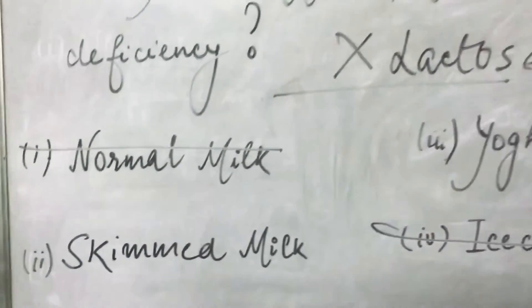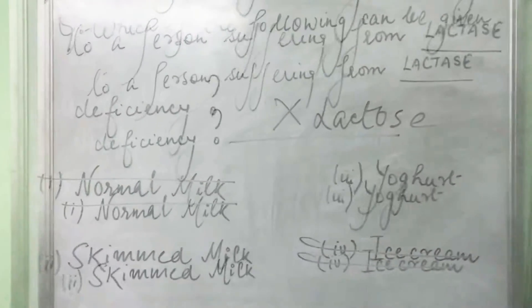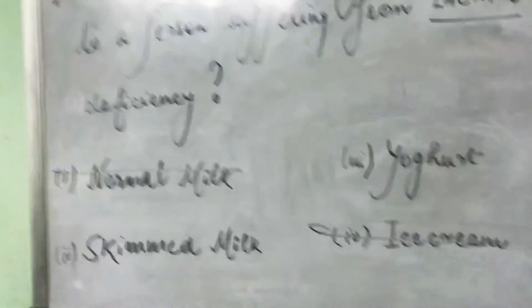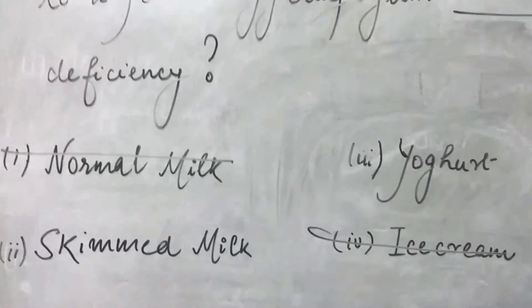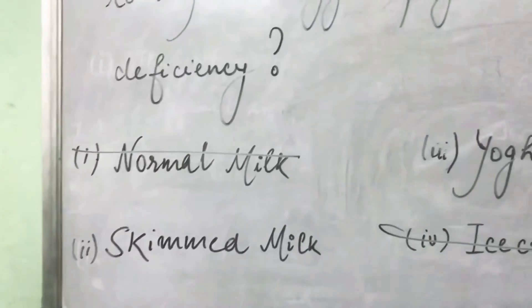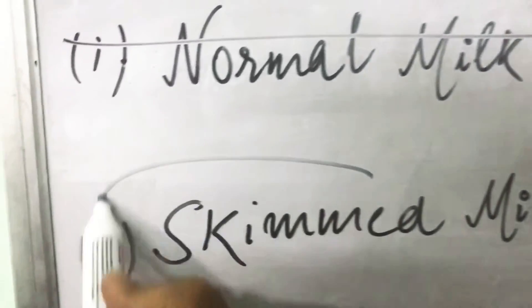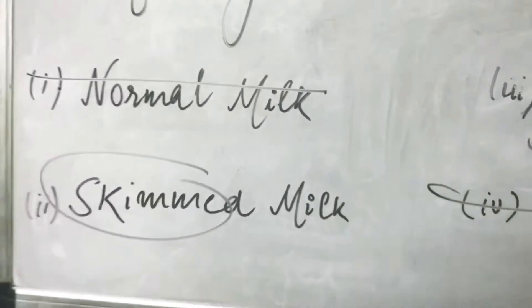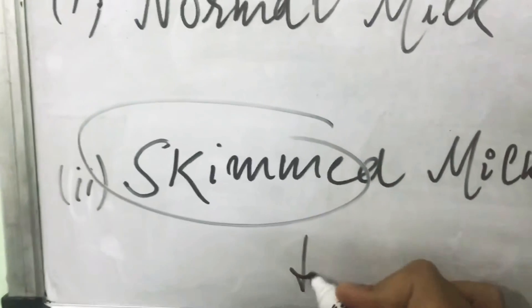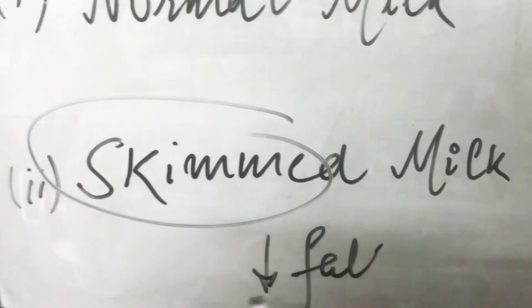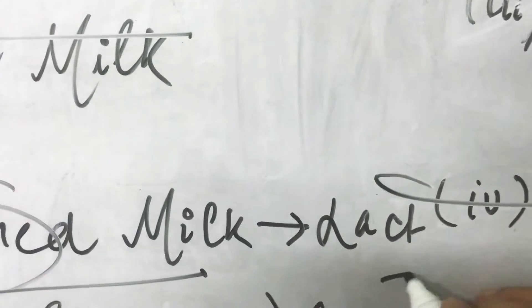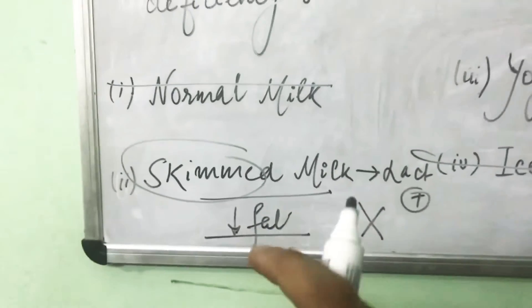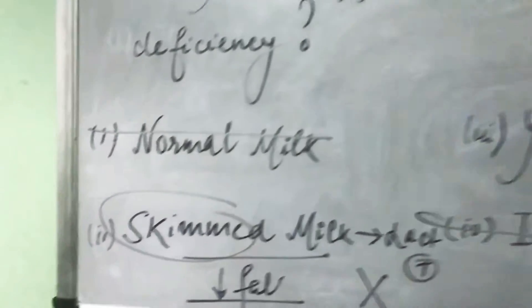Now, people can be confused between yogurt and skim milk. If you've ever gone to a dairy, you'll know there's full cream milk, skim milk, toned milk, and double toned milk. Skim milk simply means the fat has been removed — it's milk with lower fat content. But that does not mean it contains no lactose. Lactose is still present in skim milk, so skim milk cannot be given to a person with lactase deficiency.